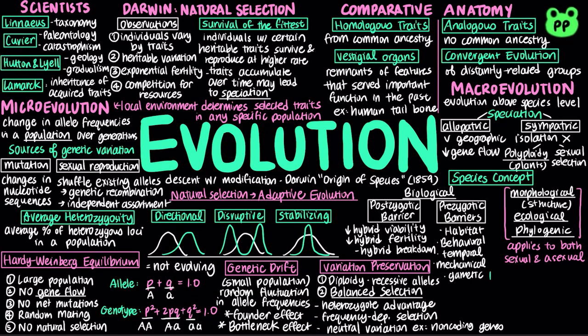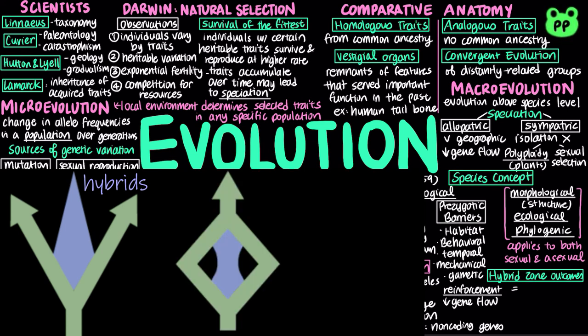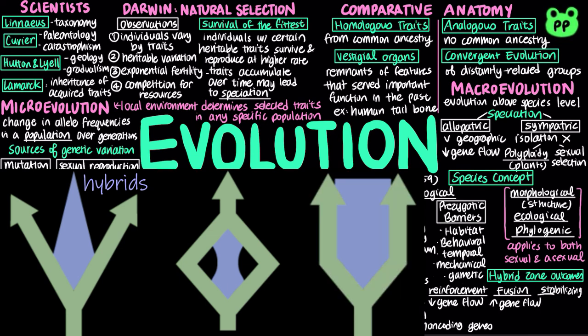A hybrid zone is a region in which members of different species mate and produce hybrids, which may lead to three possible outcomes. Reinforcement strengthens the reproductive barriers and further reduce the gene flow. Fusion weakens the reproductive barriers with eventual fusion into one species, and stabilizing outcome refers to continued formation of hybrid individuals.